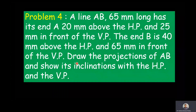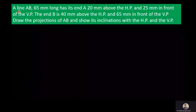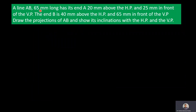Now we will extract the data from this problem. The true length of the line is 65 mm. One end of the line, A, is 20 mm above the HP and 25 mm in front of the VP. The other end B is 40 mm above the HP and 65 mm in front of the VP. In orthographic projection of points, front view points are denoted by lowercase letters with prime, and top view points are denoted by lowercase letters without prime.